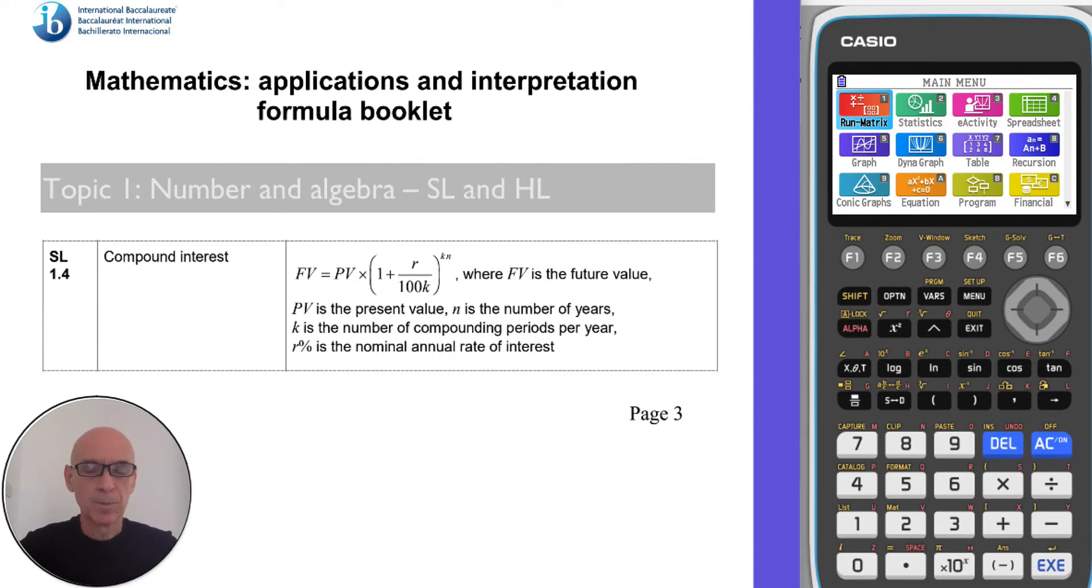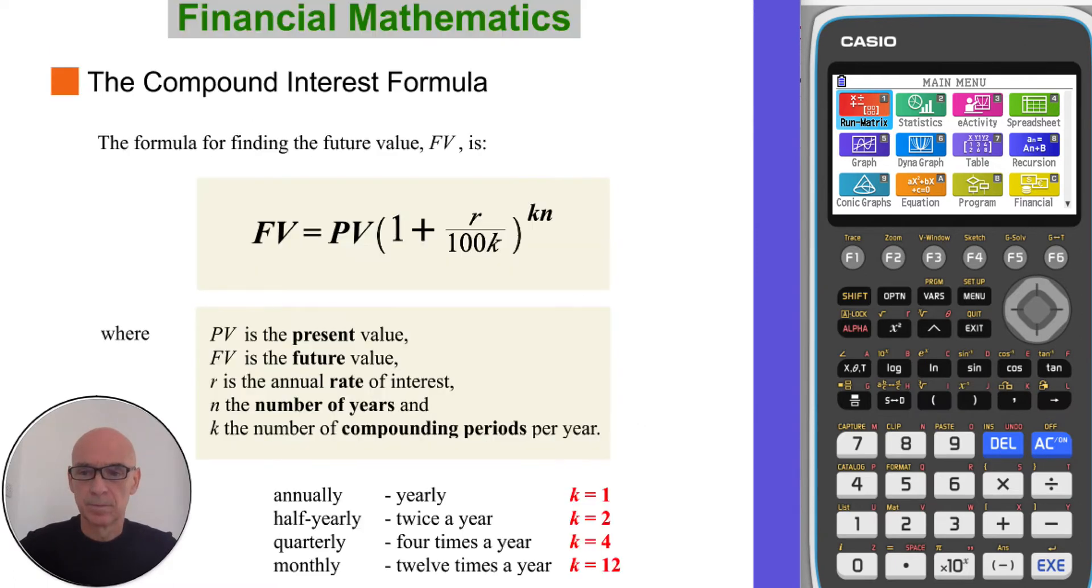The formula for compound interest is shown on page 3 of your formula booklet. That formula for calculating a future value, FV, is shown here,